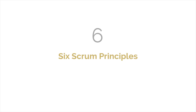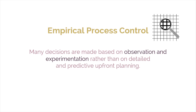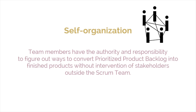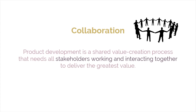The six Scrum principles include the following. Empirical process control, in which many decisions are made based on observation and experimentation rather than on detailed and predictive upfront planning. Self-organization, which implies that team members have the authority and responsibility to figure out ways to convert the prioritized product backlog into finished products without the intervention of stakeholders outside of the Scrum team. Collaboration, in which product development is a shared value creation process that needs all stakeholders working and interacting together to deliver the greatest value.